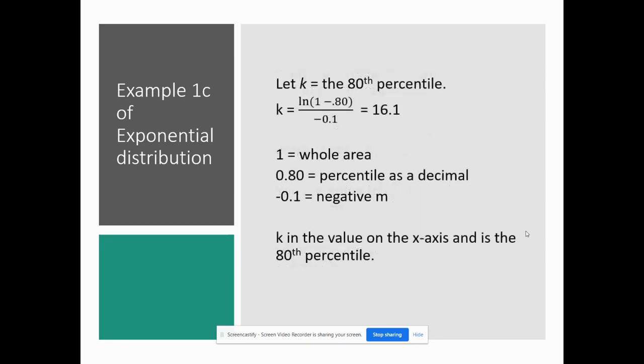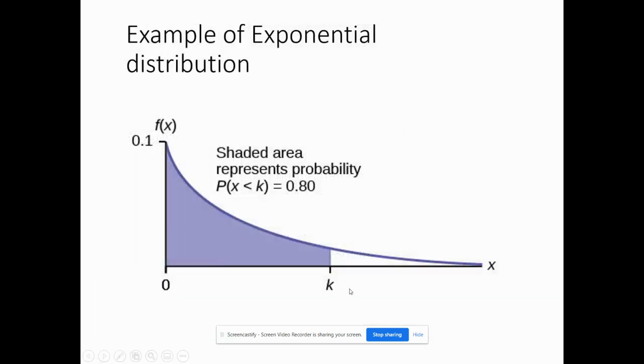So this is what you do. K is the 80th percentile, so I do K equals LN times 1 minus 0.80 divided by the negative M. So I'm doing LN, where 1 minus the percentile I'm looking for, divided by negative 0.1, which is the negative M. So remember, that's the X value and that's the 80th percentile, and I get 16.1. So that means this K right here is 16.1. That's all that means.